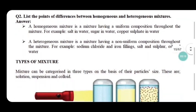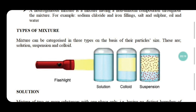Mixtures are again classified into three types based on particle size: solution, colloid, and suspension. To identify them, conduct a simple test. Fill water in a beaker and add some salt — mix thoroughly and keep it on your lab table. In a second beaker, fill water and add a cup of soil, mix them thoroughly and keep that beaker on the lab table as well.